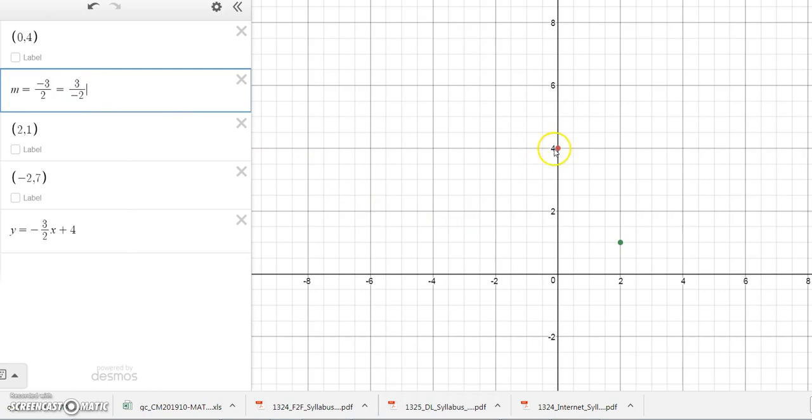Well, we can do that. Start with our y-intercept and this time go up 1 unit, 2 units, 3 units, and then since the denominator is -2, go to the left 2 and we get a point right here. Then we can just draw the line through the points. So if you connect the dots here, then you get that line y equals -3/2 x plus 4.